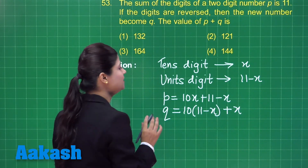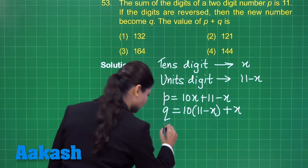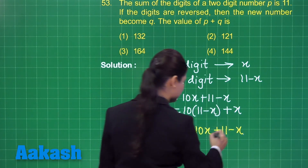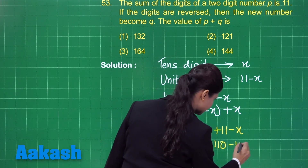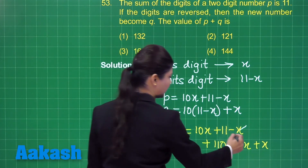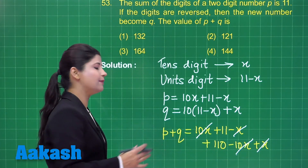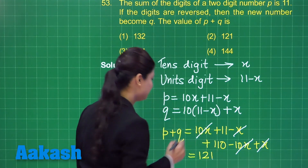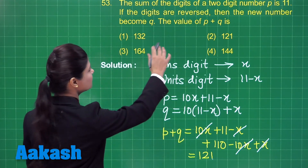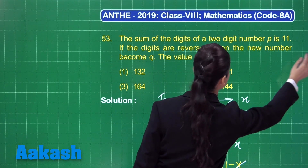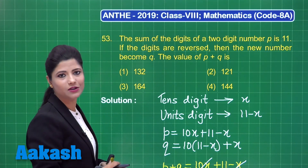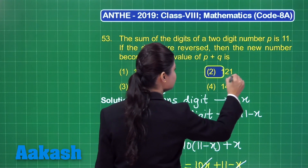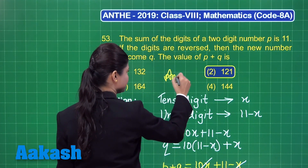You need to obtain the value of P plus Q. When I write P plus Q, this is clearly equal to 10x plus (11 minus x) plus 110 minus 10x plus x. You can see that plus x minus x gets cancelled and plus 10x minus 10x gets cancelled. I am left with 110 plus 11, which is equal to 121. That means P plus Q is equal to 121. The value of P plus Q out of these four options — 132, 121, 164, and 144 — is clearly found in option number 2.